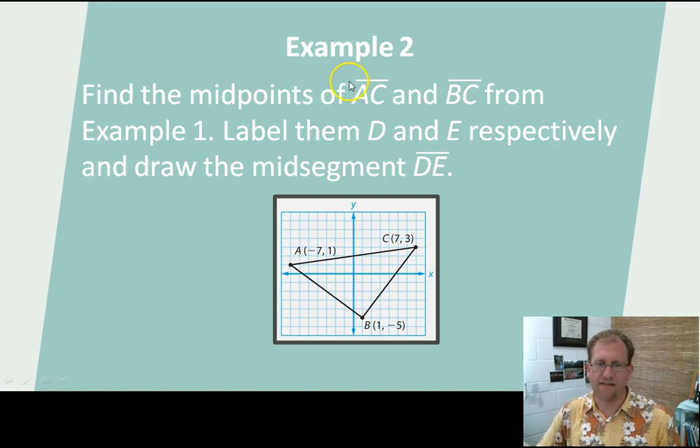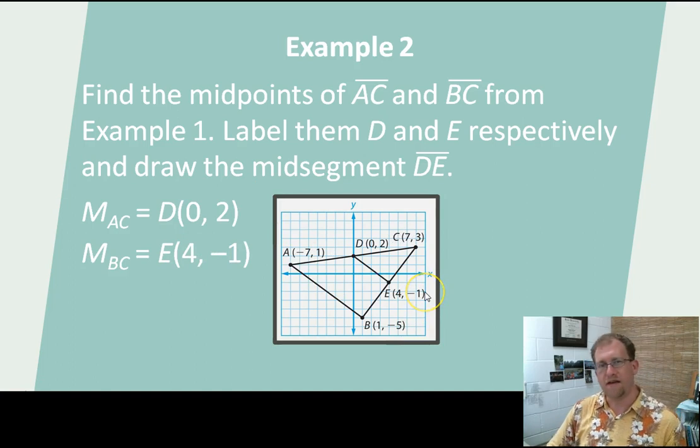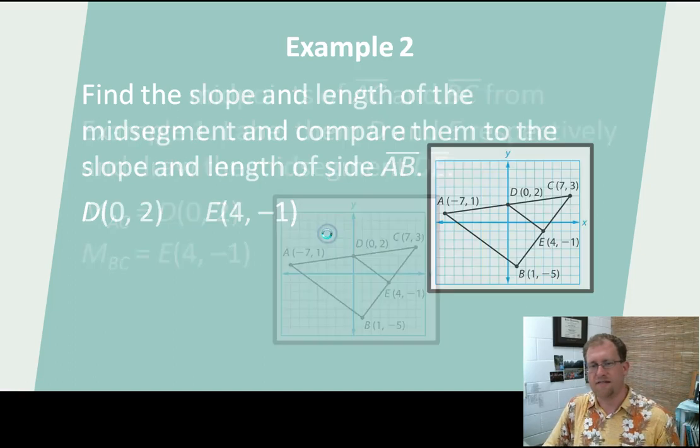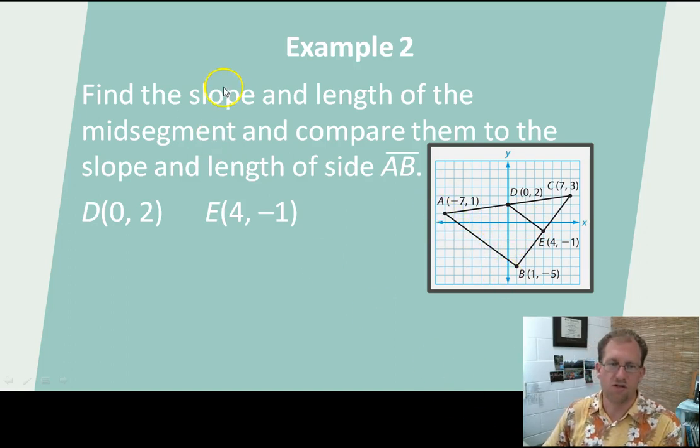You find the mid-points of AC and BC from example one. We're going to discover the mid-point of AC is point D and the mid-point of BC is point E. We're going to put those on the triangle and draw a line to them. And what we've discovered is that these lines always run parallel to the third side of the triangle.